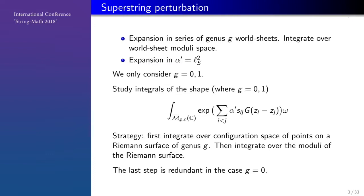The strategy for tackling these integrals is: first, think of the surface as being fixed and particles as moving around on this surface, and integrate over all possible particle positions. Having done that, you then integrate over the moduli of the surface. So there's a two-stage process. But in the case of genus 0, there is no moduli of a Riemann sphere — it reduces to a point, so the last step will not be visible.